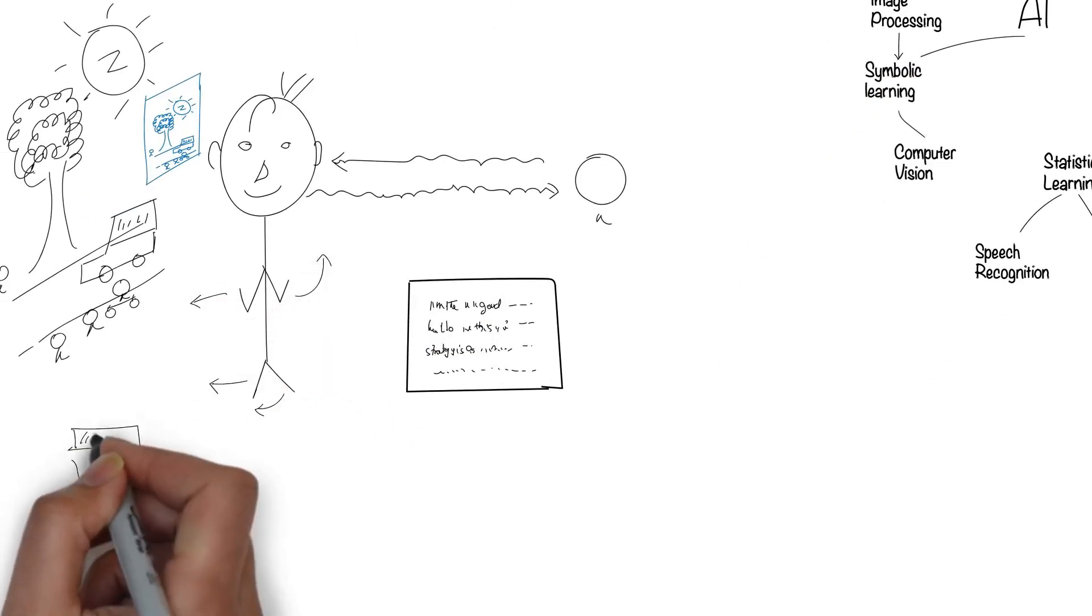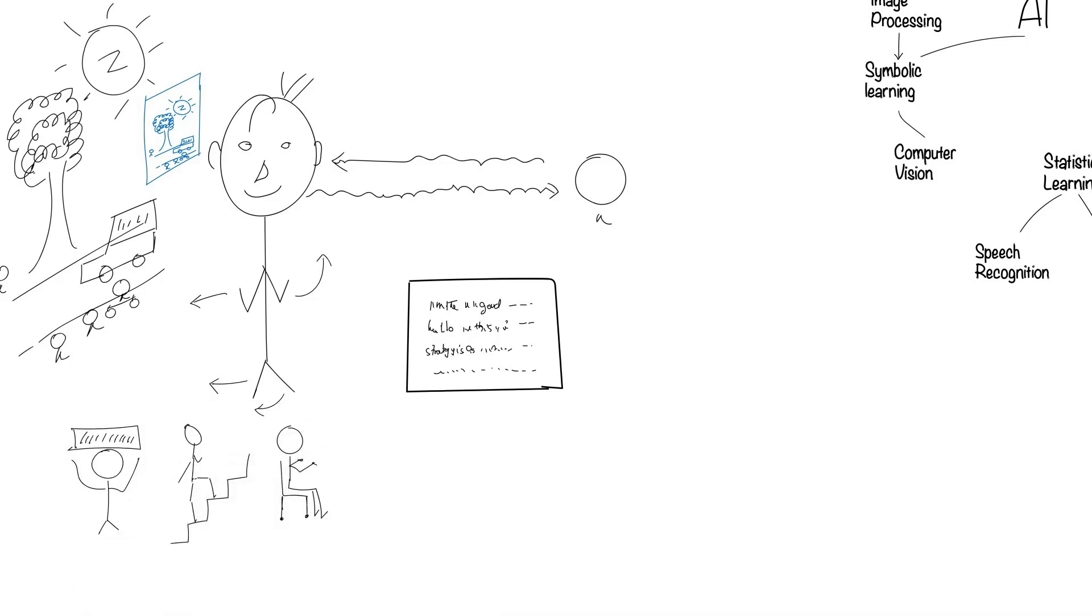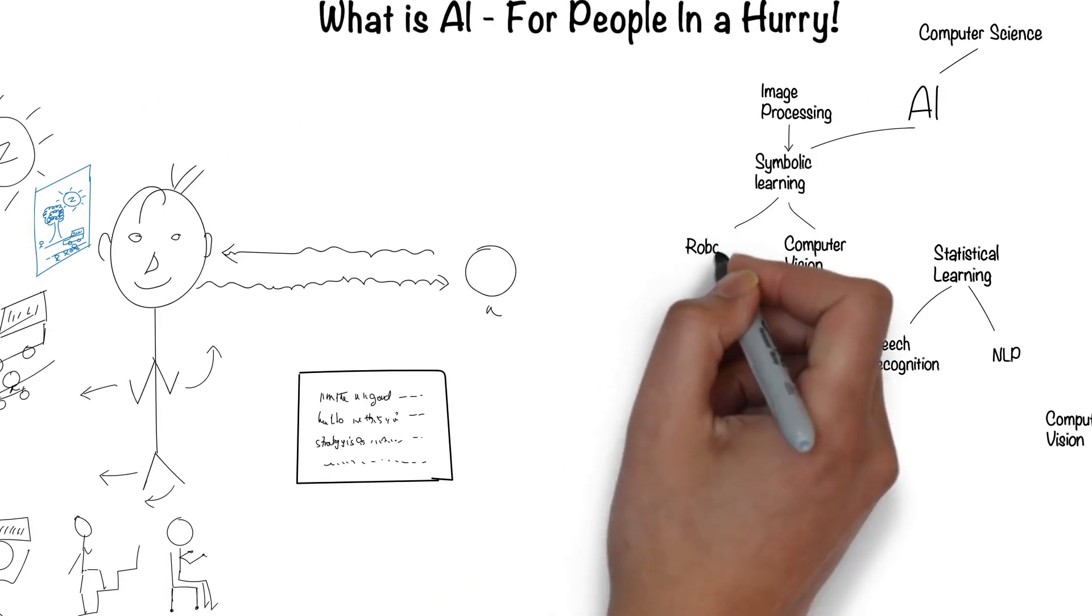Humans can understand their environment and move around fluidly. This is the field of robotics.